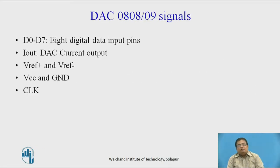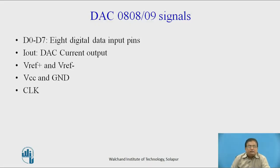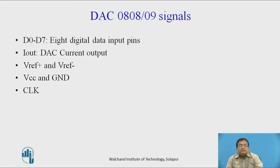Here we are discussing the DAC 0808/09 signals. This 0808 DAC is 8-bit, meaning the DAC has 8 digital data input pins, that is D0 to D7. The output of this DAC is in the form of current, and this output pin is named as I_out.